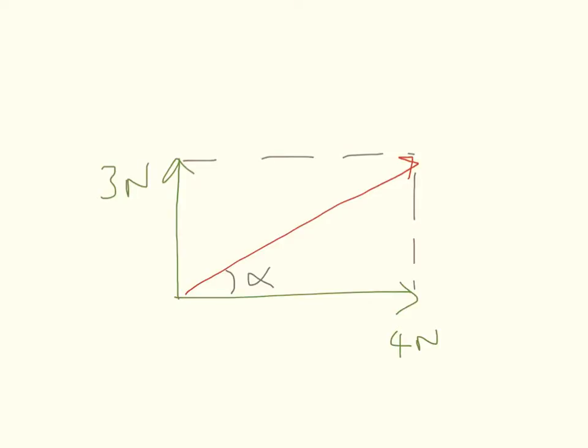To work out the angle the resultant vector makes with the horizontal, we need to use SOHCAHTOA. I can see that the three newtons will be opposite the angle and the four newtons will be adjacent.